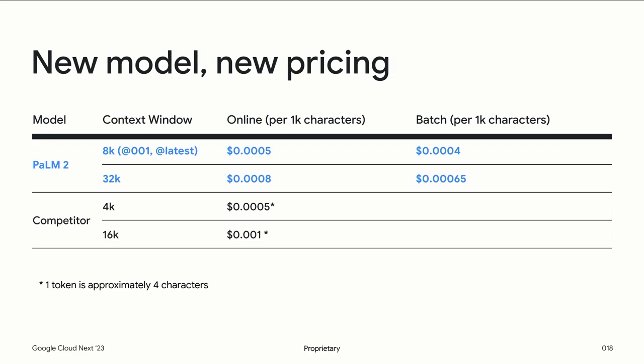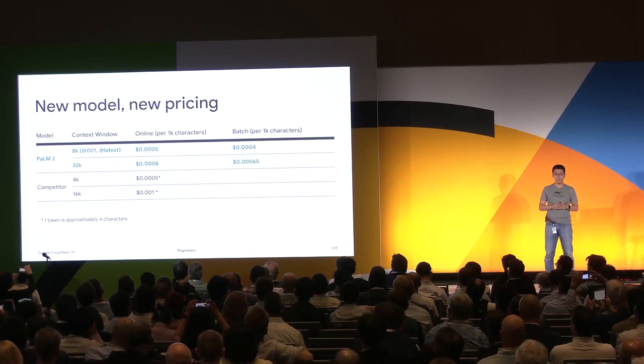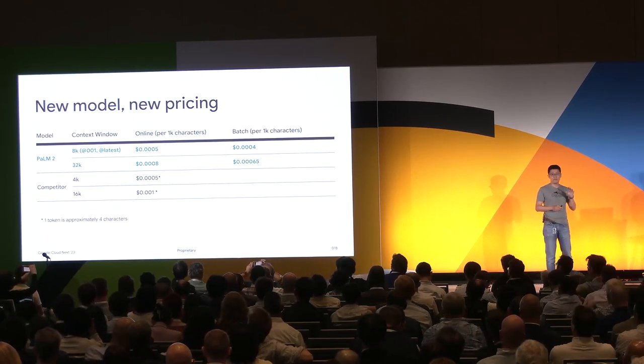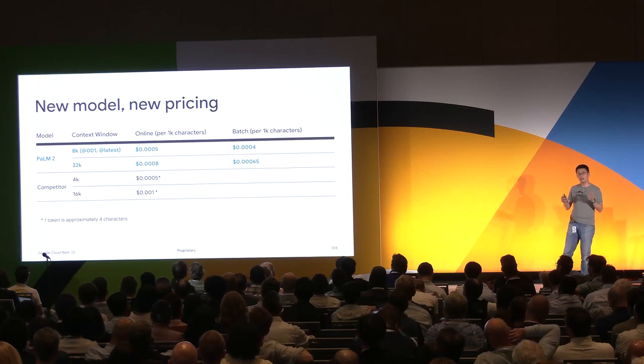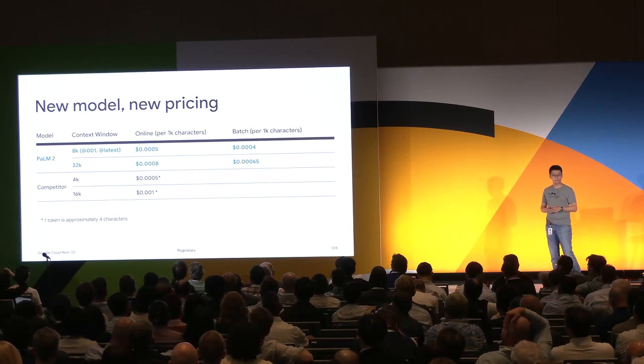Last but not least, with the new models we're also introducing new pricing. Building on top of Google's advanced TPU and GPU infrastructure, we are constantly pushing the boundary of efficiency optimizations. Today we're announcing a 50% price reduction on our online prediction calls. If you compare it with competitors at the same price point, you get double the size of the context window. If you're running a non-time-sensitive job on batch, you can further benefit from another 20% savings. We're rolling out this new pricing starting early September, and I hope with the new pricing we can unlock a lot of new use cases that people have never imagined before.